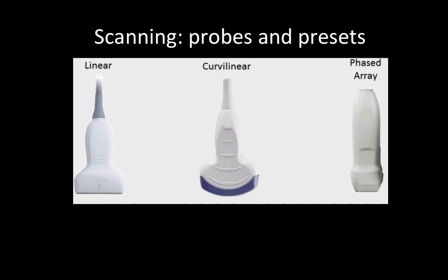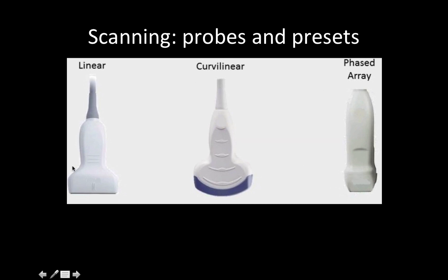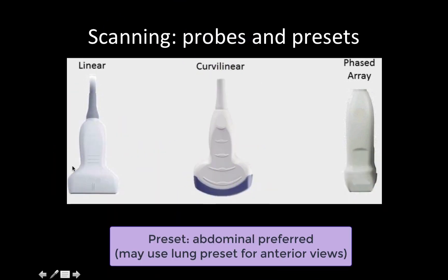A brief word about probes and presets. For most of your lung scanning, either the curvilinear or the phased array probe should be used. The linear probe can be used if you are looking exclusively at the pleura, for example for pneumothorax, but otherwise will not have the depth to adequately visualize deeper lung artifacts. The lung is traditionally scanned using the abdominal preset. Some newer machines may have a lung preset; however, this tends to eliminate a lot of the image manipulation that helps visualize solid organs. The lung preset may be used for anterior views and differentiating A versus B lines, but for dependent views and optimal visualization of solid organs, the abdominal preset is preferred.